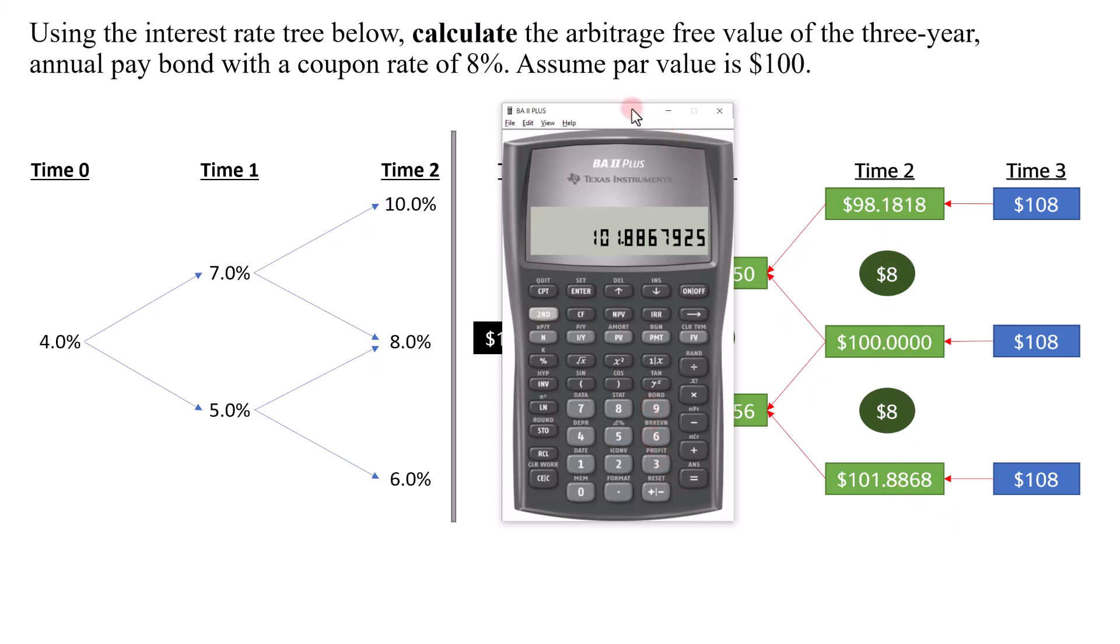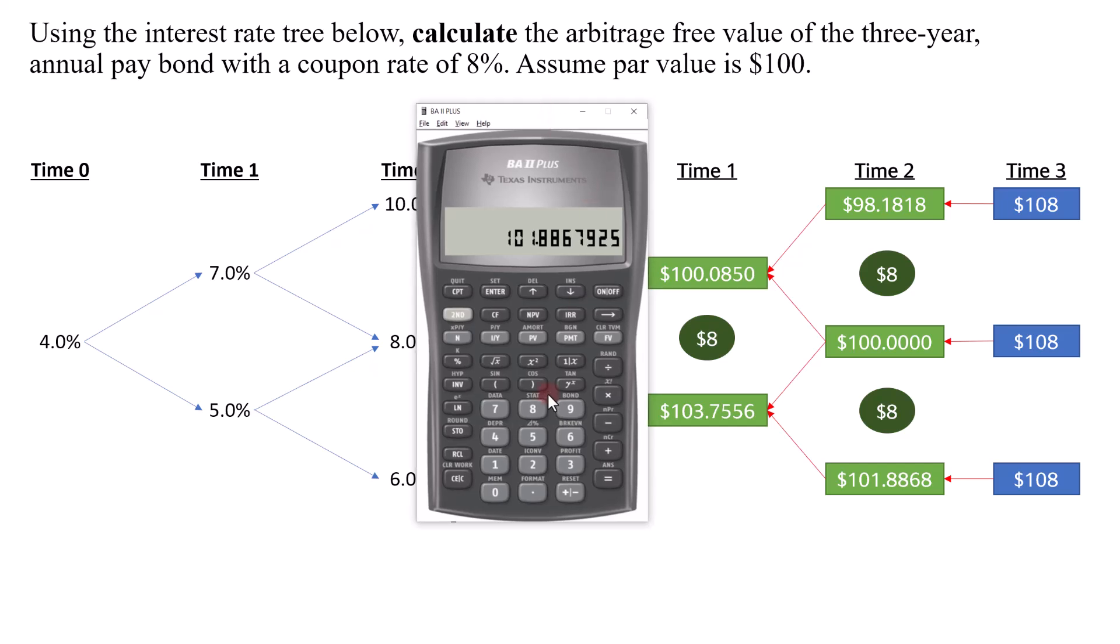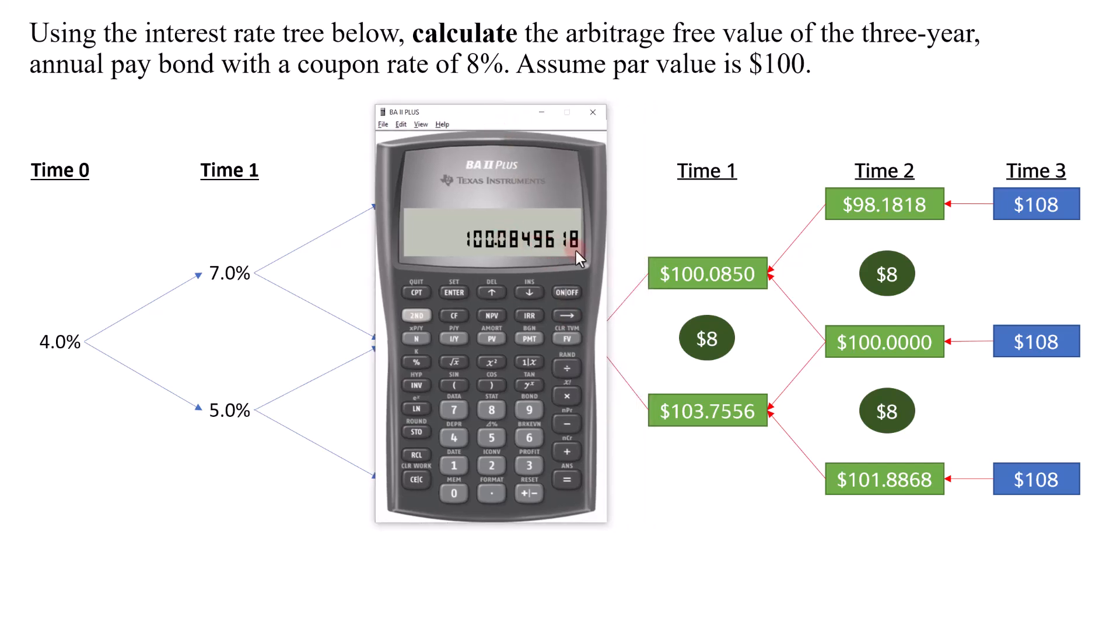And then now I'm going to discount it back to Time 1. So what we need here is using the recall function. I can just type recall 9 plus recall 6, add it up and then divide by 2 or you can multiply by 0.5. So I'll divide by 2 and then I'll add the coupon here, $8. And then I will discount it back to Time 1 using 7%. So divide by 1.07. I'll get 100.08496. I'll store this as number 8.